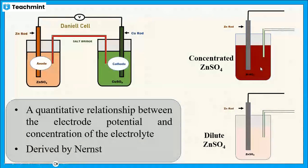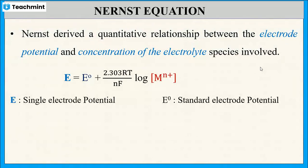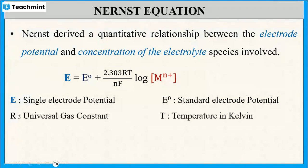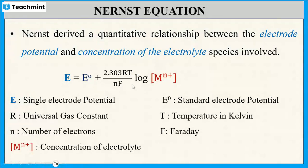The Nernst equation is given by: E = E⁰ + (2.303RT / nF) × log[Mⁿ⁺], where E is the single electrode potential, E⁰ is the standard electrode potential, R is the universal gas constant, T is the temperature in Kelvin, n is the number of electrons, F is Faraday's constant, and [Mⁿ⁺] is the concentration of the electrolyte.